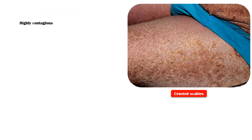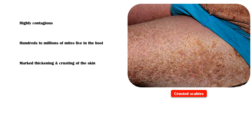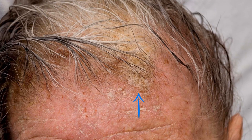Crusted scabies is a highly contagious form of scabies. In this variant, hundreds to millions of mites infest the host individual. It manifests with marked thickening and crusting of the skin. In contrast to classic scabies, the lesions in crusted scabies involve larger areas, marked scaling is seen, and pruritus may be minimal or absent. Nail dystrophy and scalp lesions may also be present.